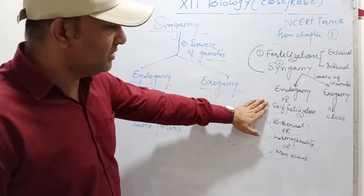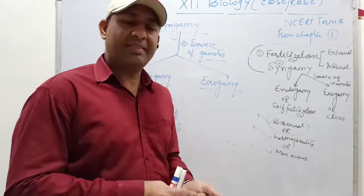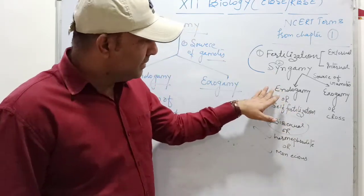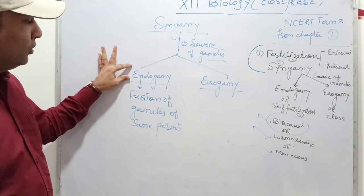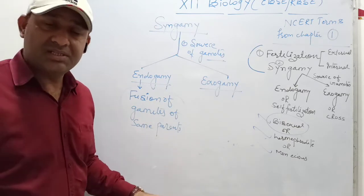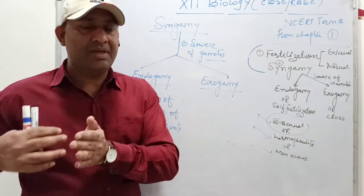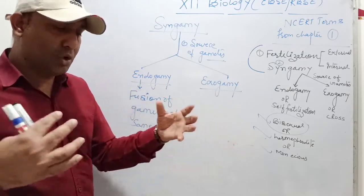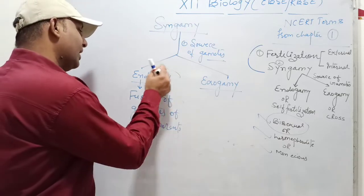So bisexual means both reproductive organs, male and female, in a single body. Hermaphrodite means the animal which possesses testis and ovary in a single body. Monoecious means the single body possesses the male reproductive part and female reproductive part. Self-fertilization means the process by which the male gamete released from one part of the body is transferred to another part of the same body. The main term for this is endogamy — the fusion of gametes of the same parent — where one parent releases male and female gametes and both fuse within the single body.